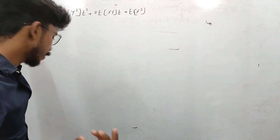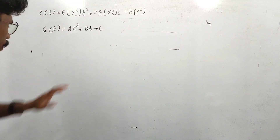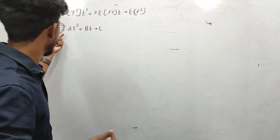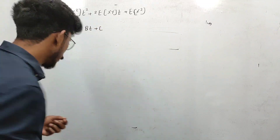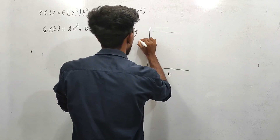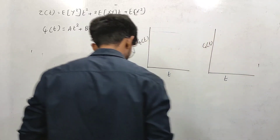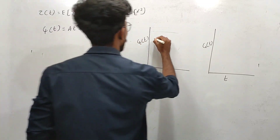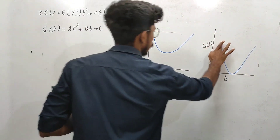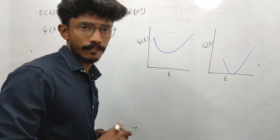Psi of t is a quadratic form: At square plus Bt plus C. A quadratic form. This is a graph. The t-axis is on the x-axis and psi of t is on the y-axis. You can consider two graphs. This is one graph; this is another graph. In general, we can say this is a quadratic form.